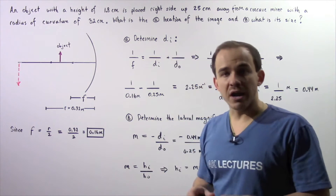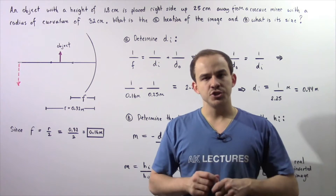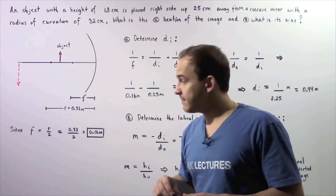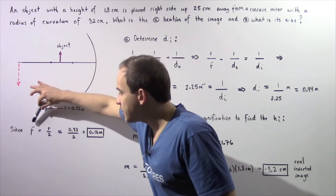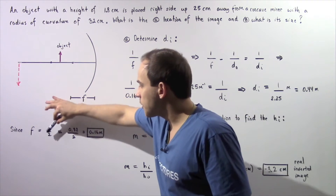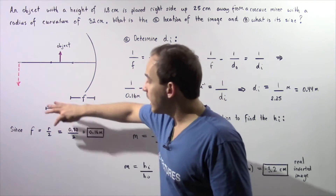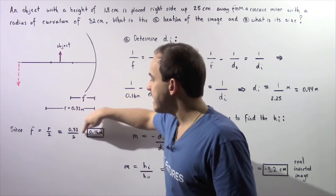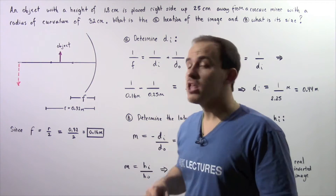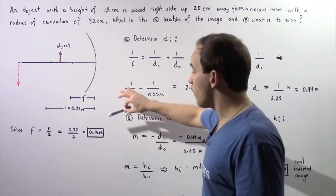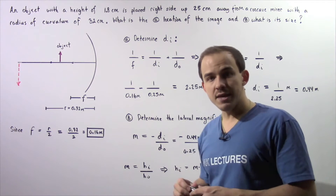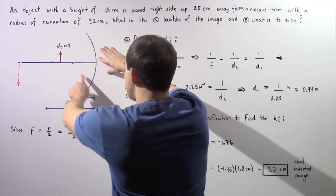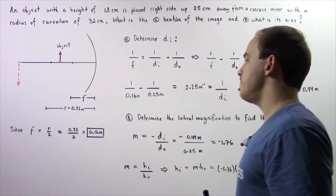Let's begin by recalling the relationship between the focal length and the radius of curvature. For a concave mirror, the focal length F is equal to the radius of curvature R divided by 2. Because R is 0.32 meters, we divide by 2 to get the focal length, which is 0.16 meters. So the distance from the center of our concave mirror to the focal point is 0.16 meters.